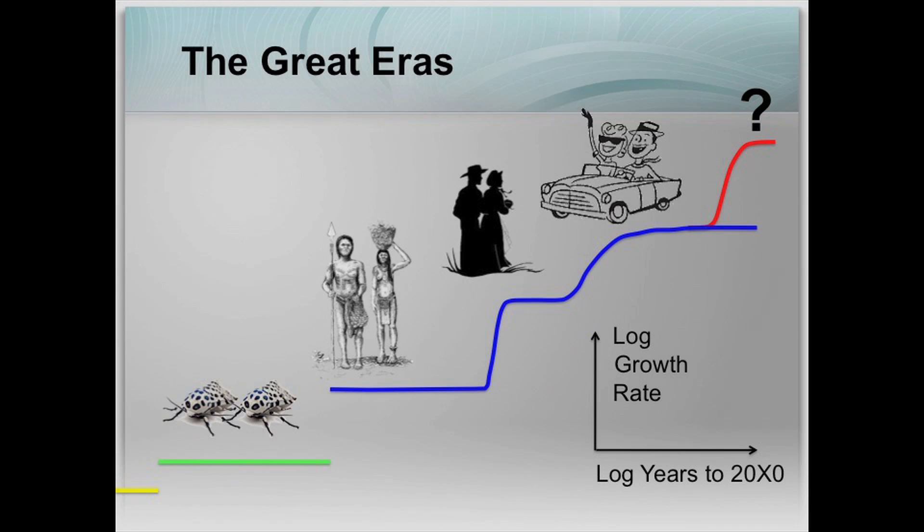This is all of history on one graph. The x-axis is logarithm of time approaching a time in the near future, so it all can fit. On the y-axis is a growth rate. For the human era, it shows the growth of foragers, then farmers, and then industry.